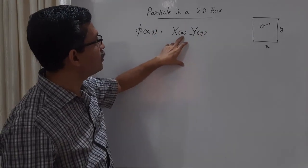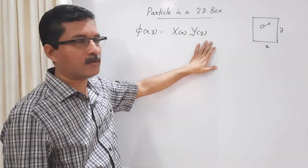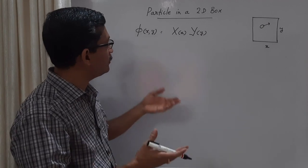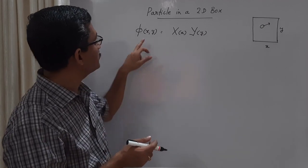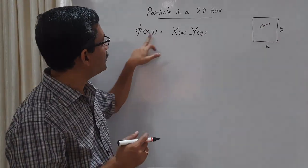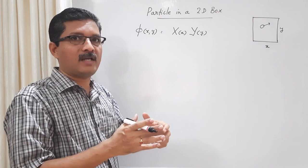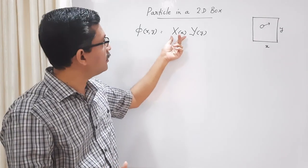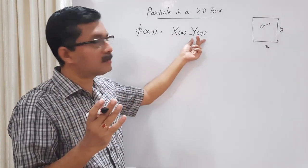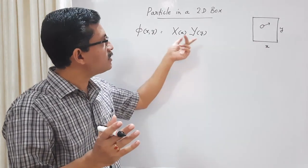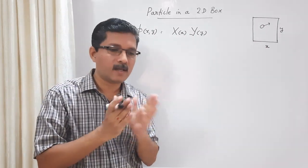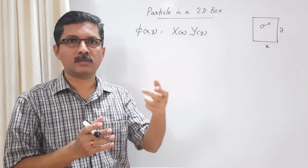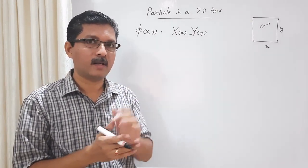Capital X is a wave function that depends only on x, and capital Y is a wave function that depends only on y. When we substitute into the time-independent Schrödinger equation and perform separation of variables, we can separate it into two equations: one that depends only on x and the other that depends only on y. Each one will be identical to the equations obtained in the particle in a one-dimensional box.